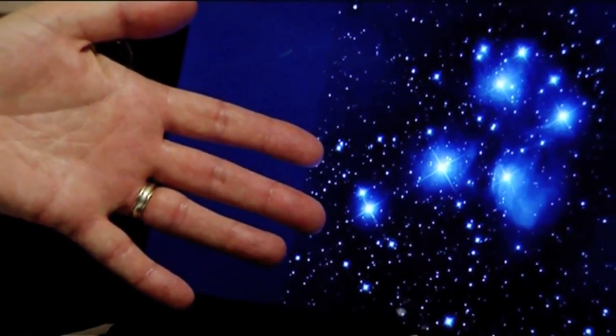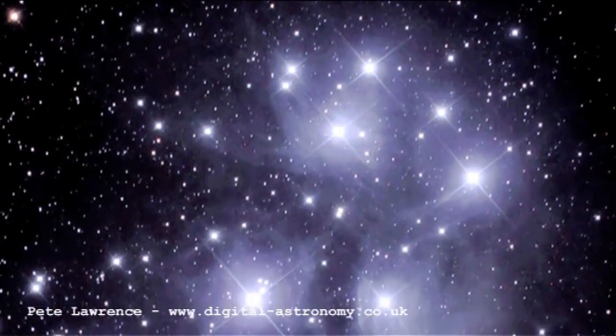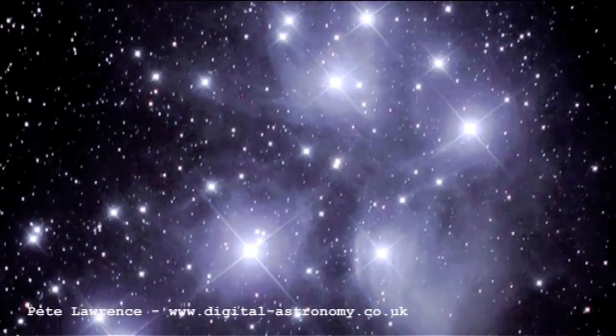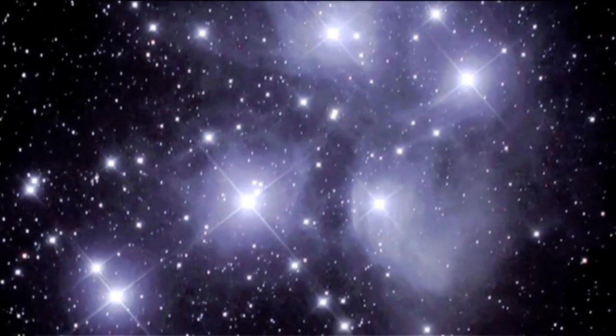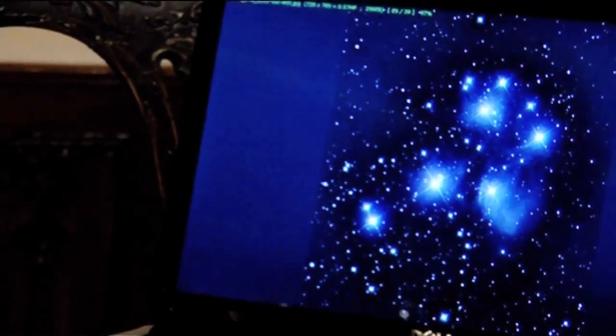When you see a photograph like this, this is actually a long exposure photograph, taken with a digital SLR camera in this case. I think this was a five minute exposure. And it's a single exposure. You'd normally, if you're doing astrophotography, you'd take lots and lots of exposures and stack them together. But the Pleiades is actually quite a bright object, and here I've been lazy and I've just taken a single exposure. And you can see that as well as all the cluster stars, there's also a lot of material around those stars as well.